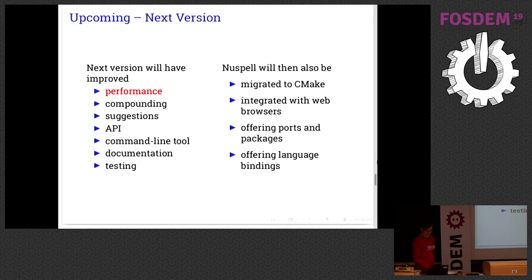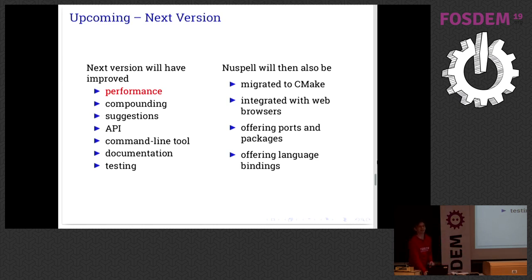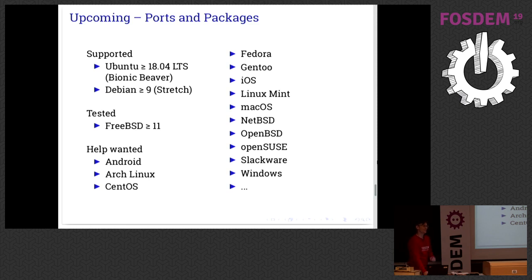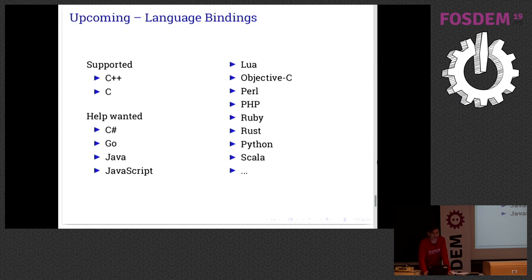Some other things we're going to do: migrate to the CMake build system and make NuSpel more available. Right now it's in our development environment and everybody can build it, but in order to really install it as a package on your distribution some more work has to be done. I'm going to see if people are interested in helping us port to these platforms and packages, and also add these language bindings to enable everyone to use NuSpel.